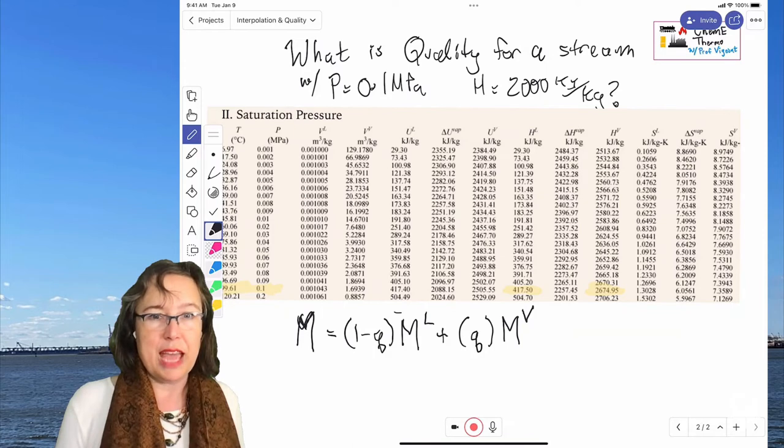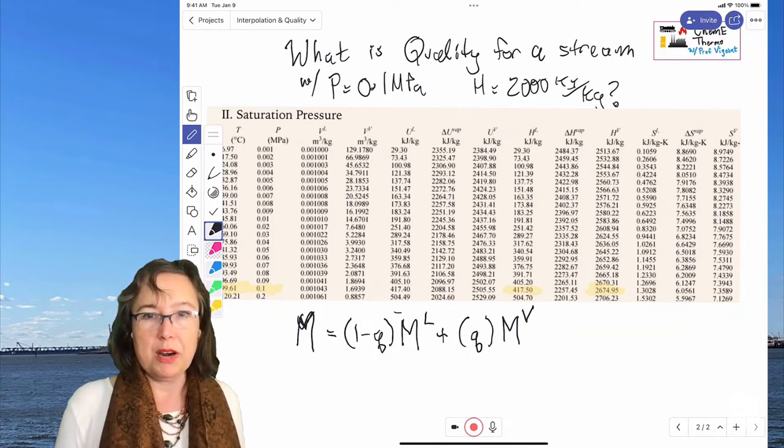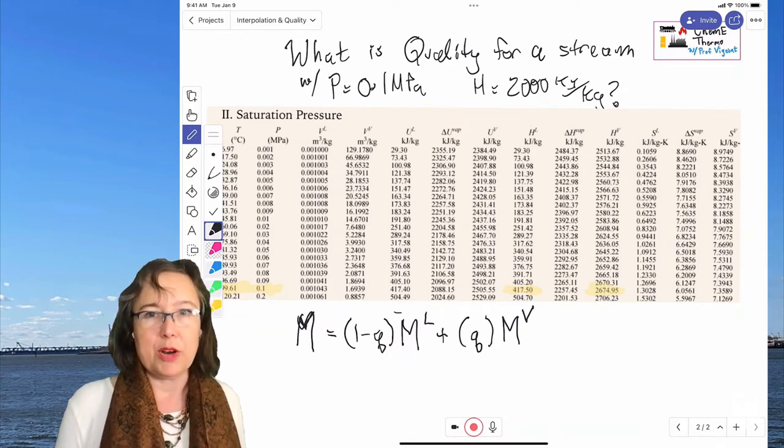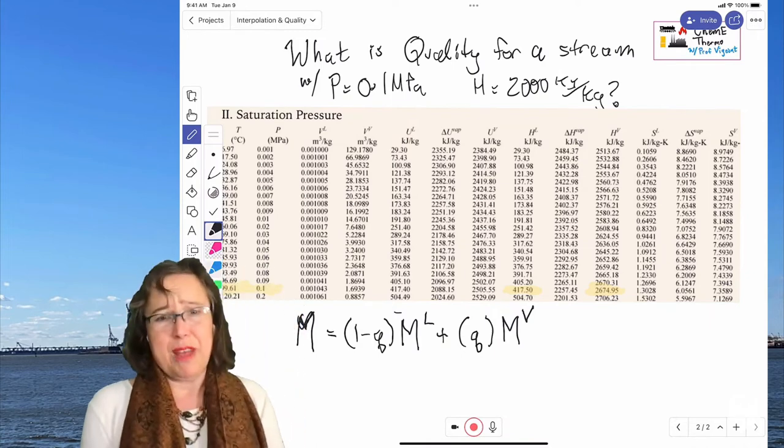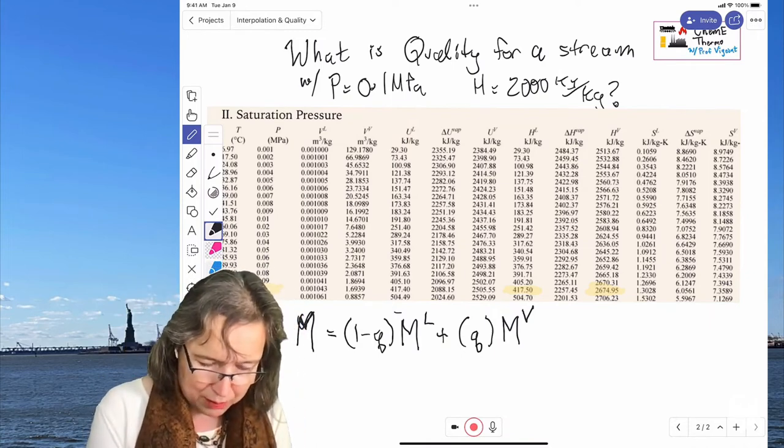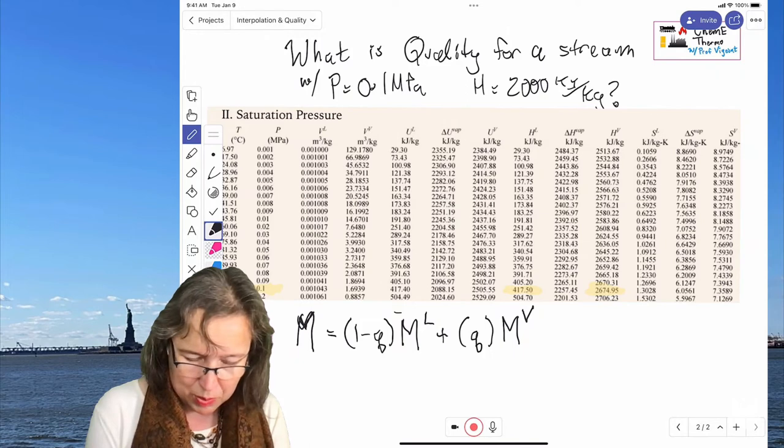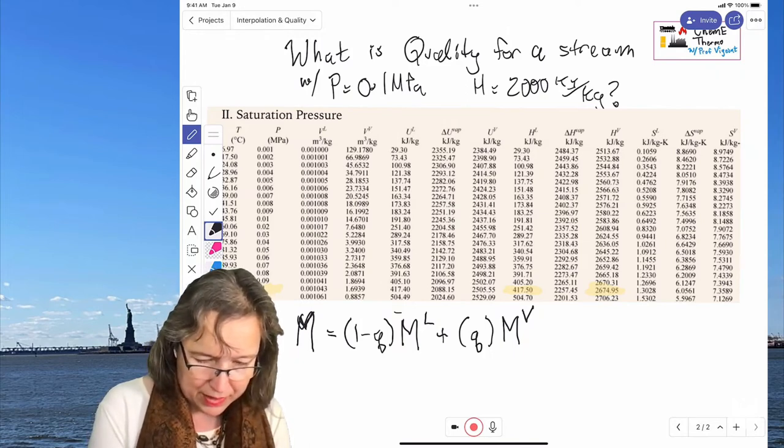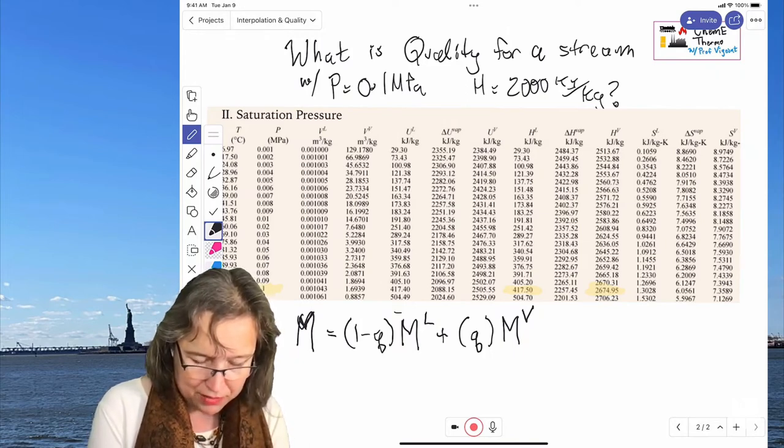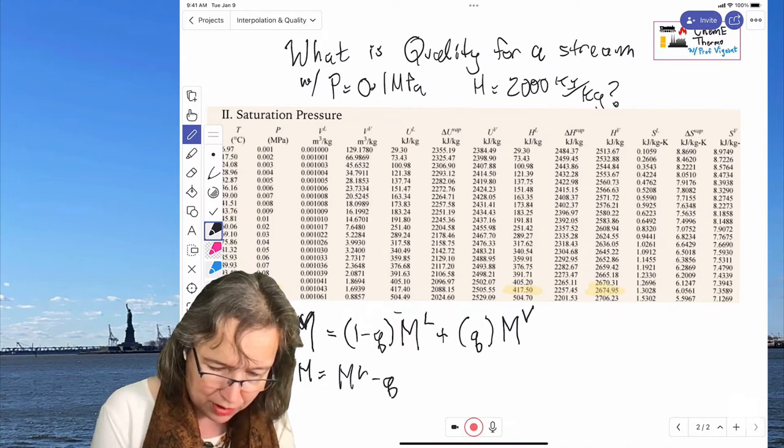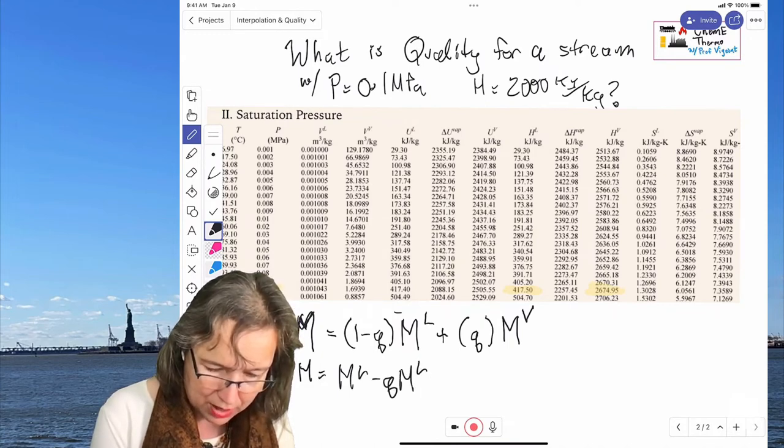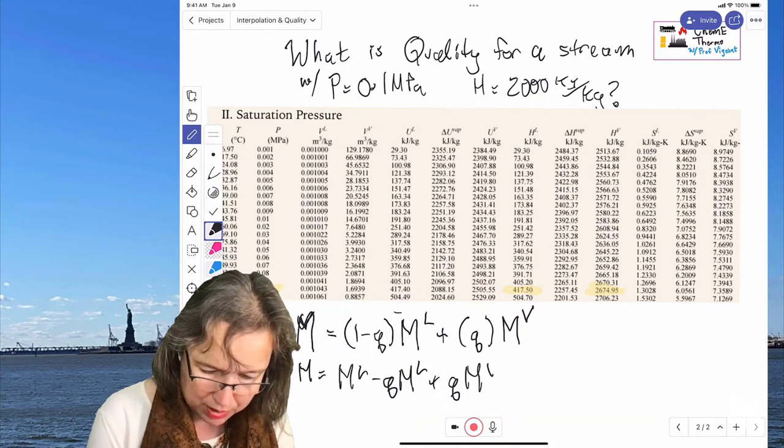And you can do that yourself, or we can have it written out here. So let's see. In fact, I'm going to go through the algebra. You can fast forward through this part. I was going to pull it out of the textbook, but I don't have that here. So, we have M equals ML minus Q times ML plus Q times MV, right?